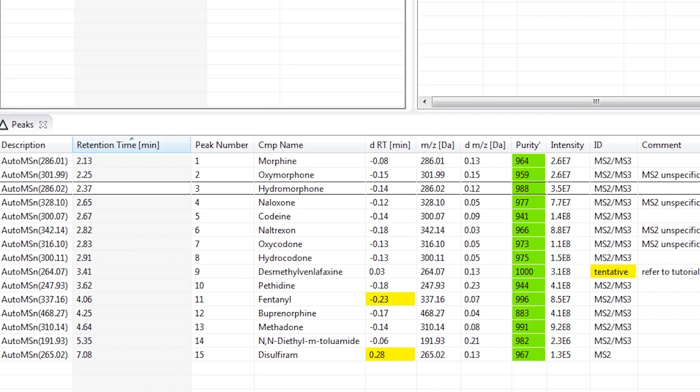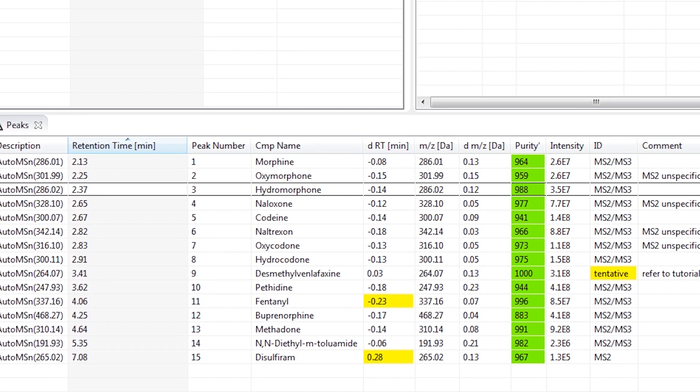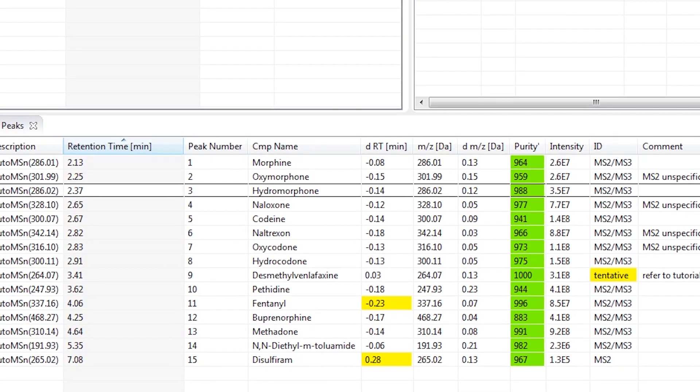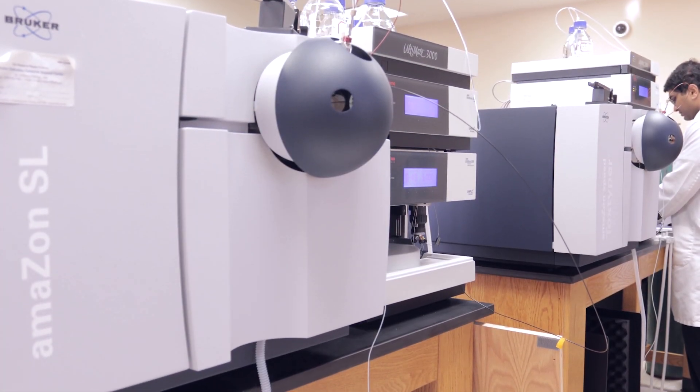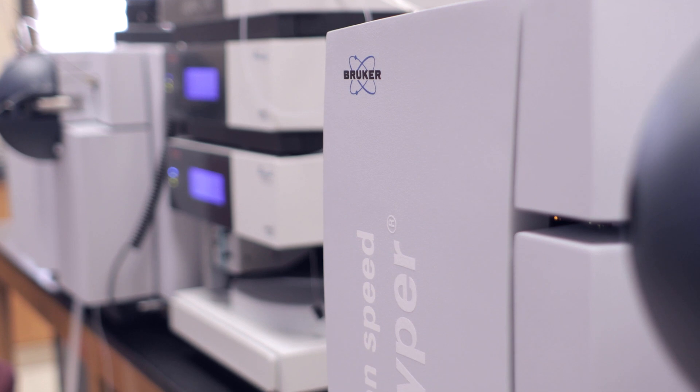It has tripled, quadrupled, maybe even more than that, the scope of things that we can test for. The idea that it's an ion trap improves our identification because we can get degrees of MS, MS, MS to second, MS to third, which really improves our identification of these things. But I think the overall, the biggest advantage is that it's really opened up an enormous scope of things that we can identify fairly simply, quickly, and with a great deal of confidence.